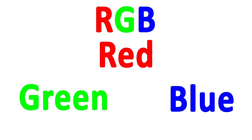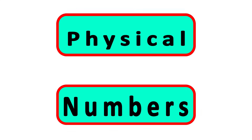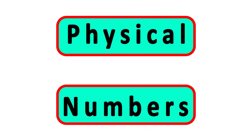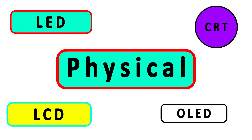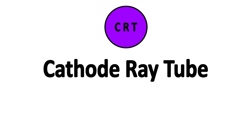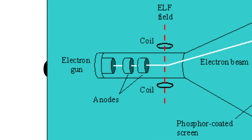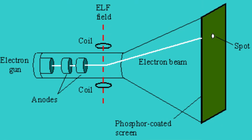Before we get to the numbers and software part of this, let's briefly talk about the physical component of how pixels work. There are quite a few different ways this is accomplished, and various methods have been used over the past few decades. I'm going to skip over CRT monitors because they're vastly outdated and function very differently, but they're very interesting and I encourage you to look into them.